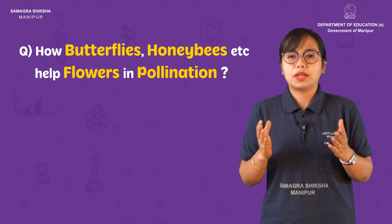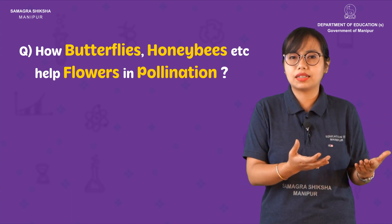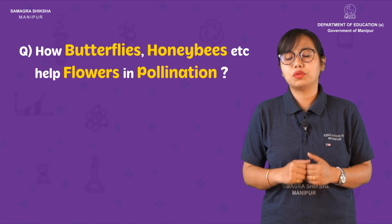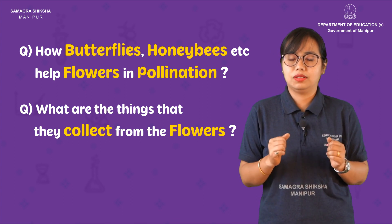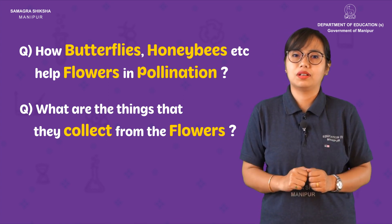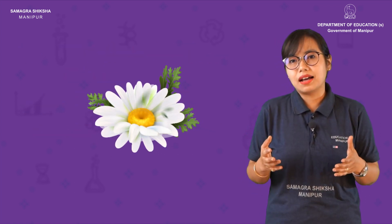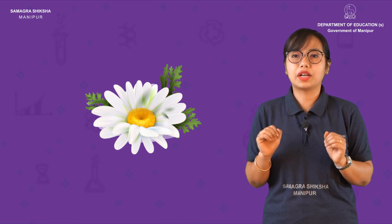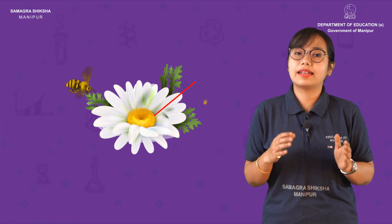The lesson is about honeybees, butterflies, or other insects. If you have a flower, the flower is sweet. If you have a liquid, in English you can use it as a nectar.